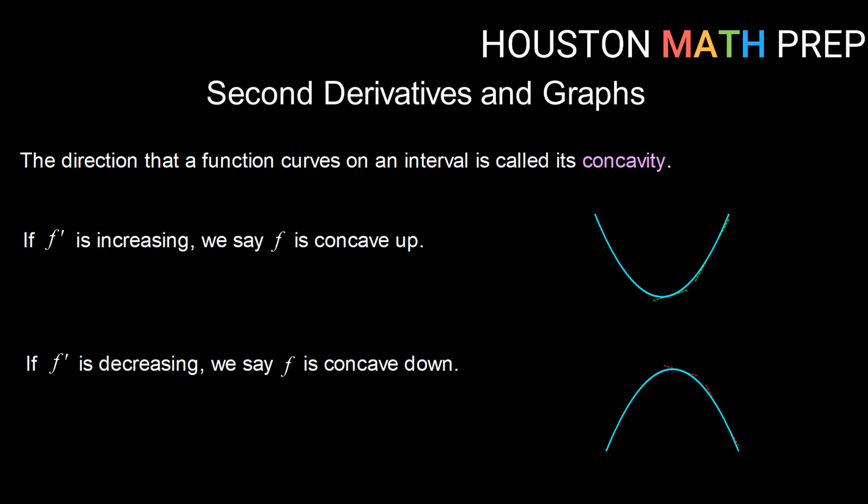The direction that a function curves is called concavity. So we have two types of concavity: concave up and concave down.